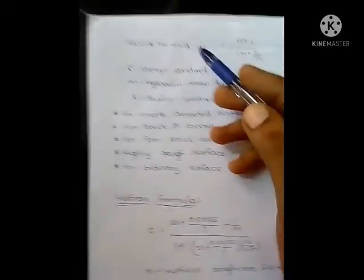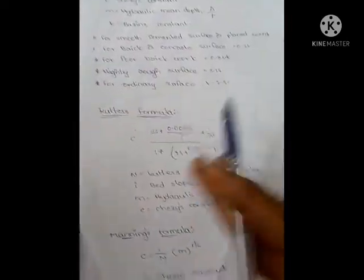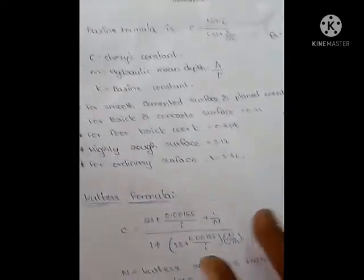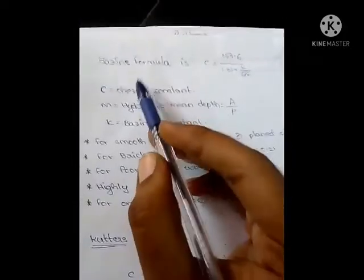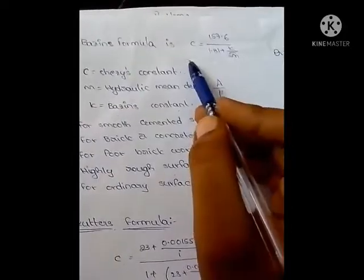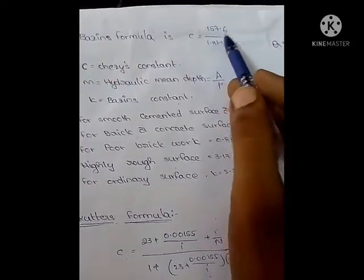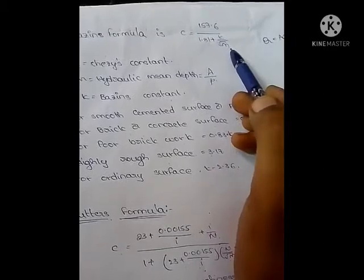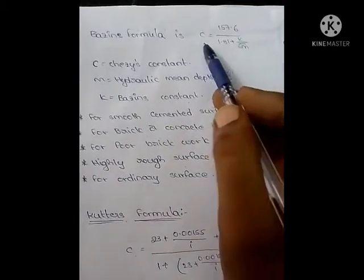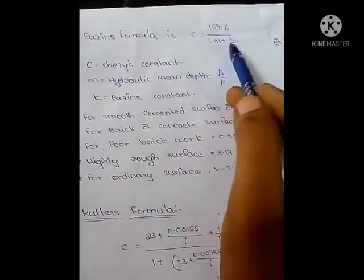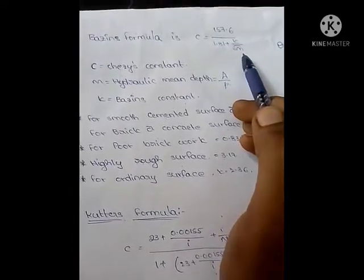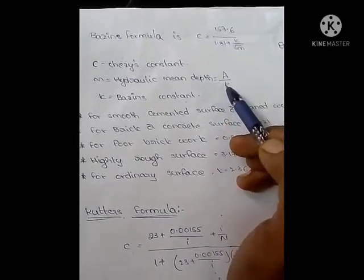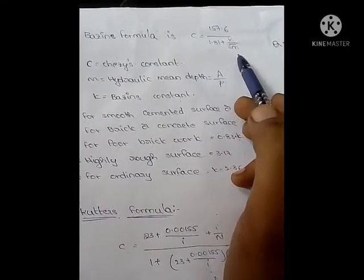For finding Chezy's constant, there are three formulas: Bayesian's formula, Cutter's formula, and Manning's formula. Let's see one by one. First is Bayesian's formula: C equals 157.6 divided by 1.81 plus K by root M. Here C is Chezy's constant and M is hydraulic mean depth, which means area by perimeter.